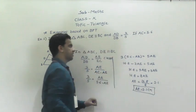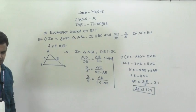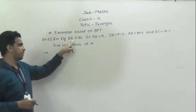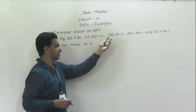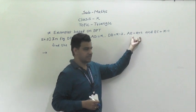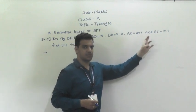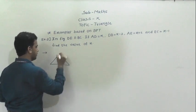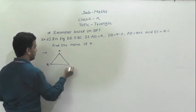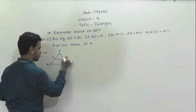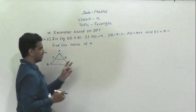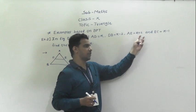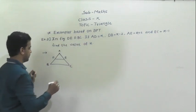Now we will see the next example. The second example is: in the figure, DE is parallel to BC. If AD is equal to X, DB is equal to X minus 2, AE is equal to X plus 2, and EC is equal to X minus 1, we have to find X. In triangle ABC, DE is parallel to BC, same as the first example, so we can write AD by DB equals AE by EC. The values are given in variables.